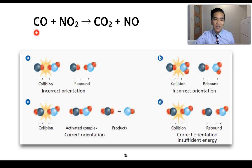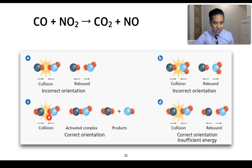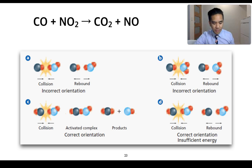This diagram here shows another example with some additional information: the reaction of CO with NO2 to produce CO2 and NO. For the first scenario, the incorrect orientation prevents the formation of products. For part B, we've still got an incorrect orientation, so this collision won't be successful. Part C, on the other hand, the oxygens and the carbon monoxide are in the correct orientation to allow for the formation of an activated complex - the bridging point between reactants and products - which then allows for the formation of products.